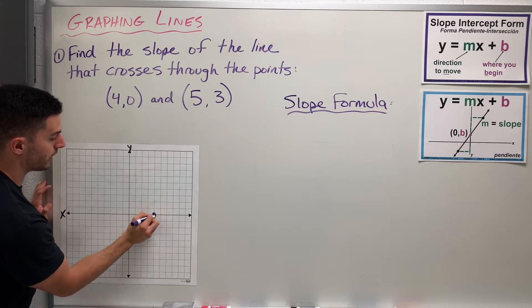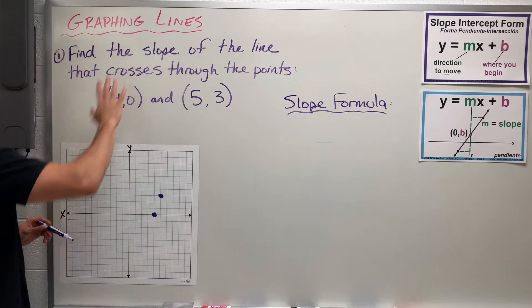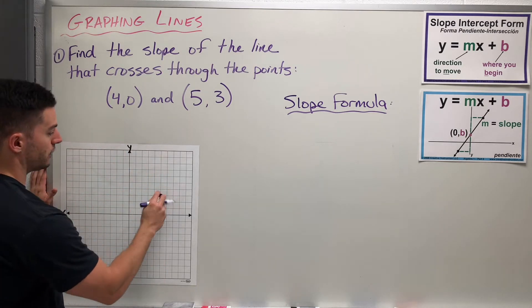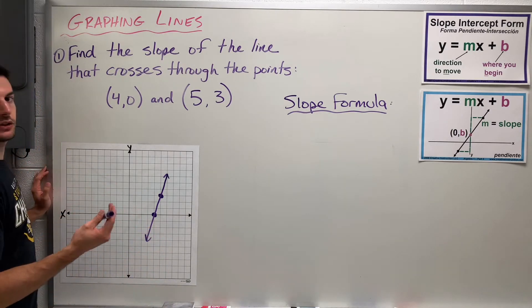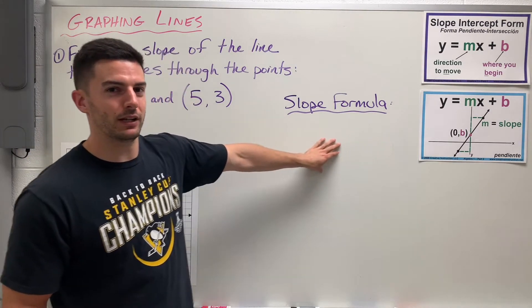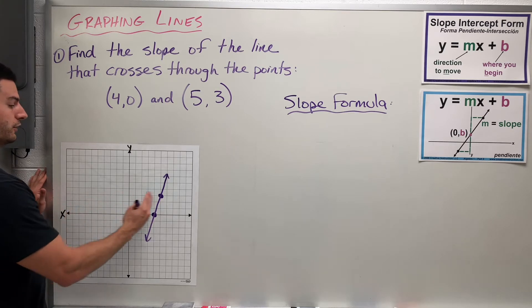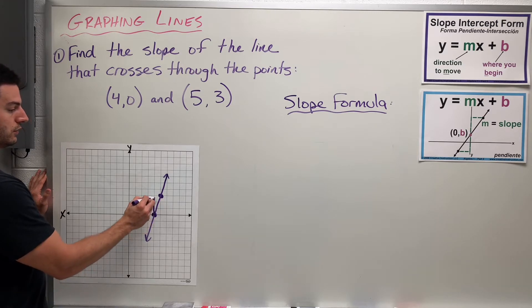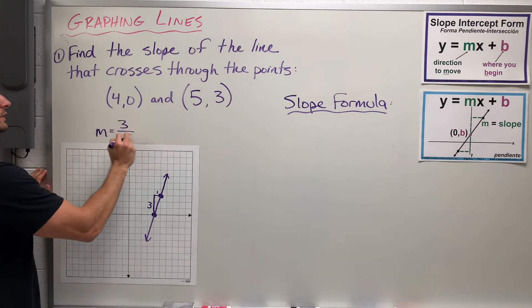So 4 on the x, 0 on the y would be right here. And this point, 5, 3 — so I go to 5 on the x, 3 on the y, and that's all I know. It wants me to find the slope of the line that goes through these two points. So I can connect them and count, just like I did before in the last video. It moves up 1, 2, 3, and then right 1 — up 3, right 1. So your slope for this is 3 over 1, or just 3.